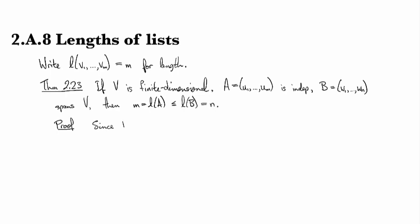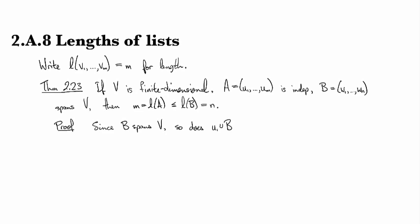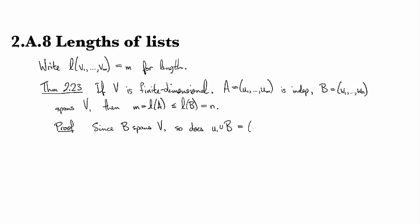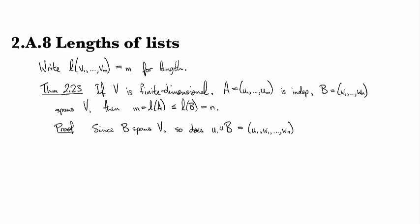So since B spans V, it's still a spanning set when we throw something else in. So I'm going to write this notation right here. This is a union of lists. And it depends on what order it's written in. So the U1 gets stuck at the front, and then all the elements of B come afterwards. So I'm defining this operation on lists right here in the middle of a proof, which is probably bad form. But too bad.